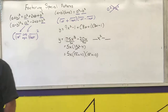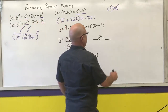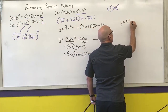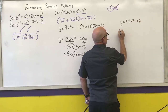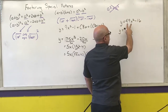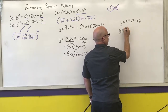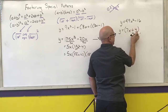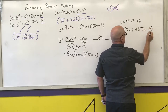Next example: 49x squared minus 16. These are both perfect squares, so I have the square root of the first plus the square root of the last, times the square root of the first minus the square root of the last. That gives me 7x plus 4, times 7x minus 4.